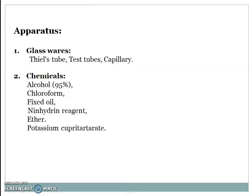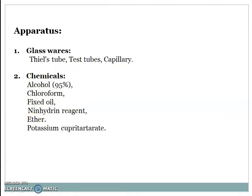Apparatus required: glassware, test tubes, capillary tubes. Chemicals required: alcohol, chloroform, fixed oil, ninhydrin reagent, ether, and potassium cupric tartrate. Now for the actual stepwise procedure, we move towards the laboratory.